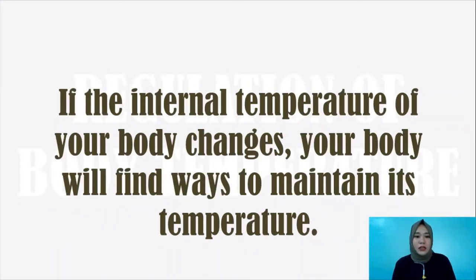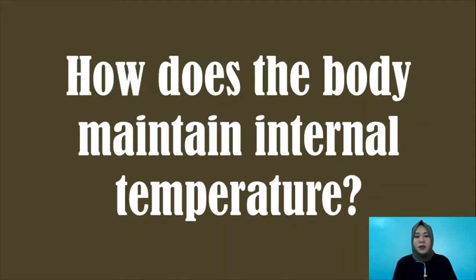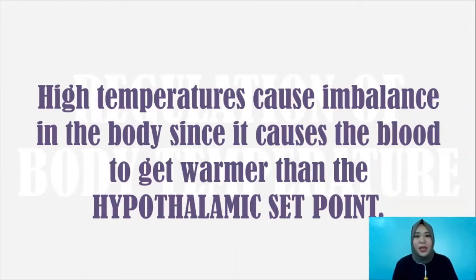If the internal body temperature changes, your body will find ways to maintain its temperature. I will show two scenarios: what the body does if it detects that body temperature is higher than normal, or lower than normal. Let's start with high temperatures — it causes imbalance in the body since it makes the blood warmer compared to the hypothalamic set point.